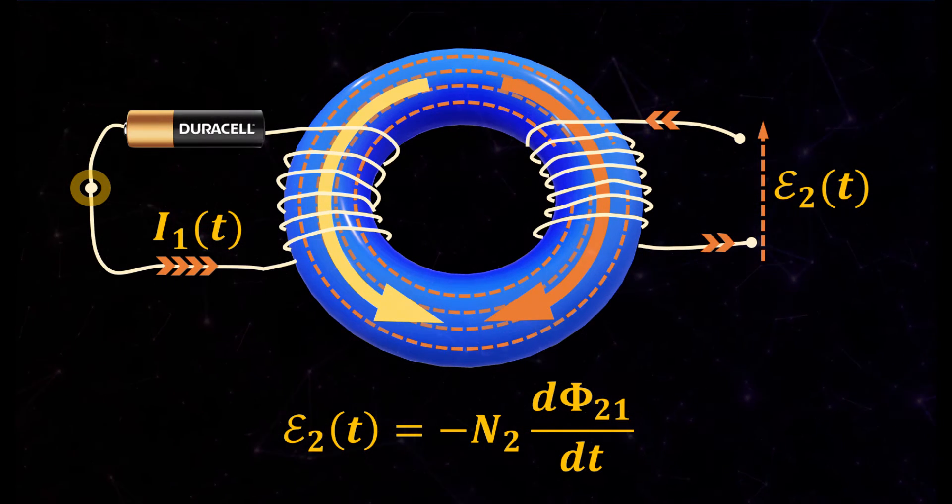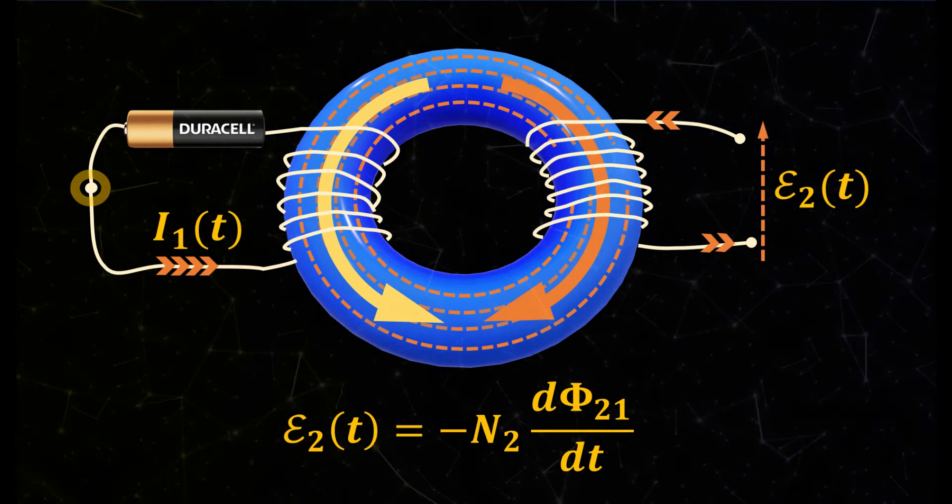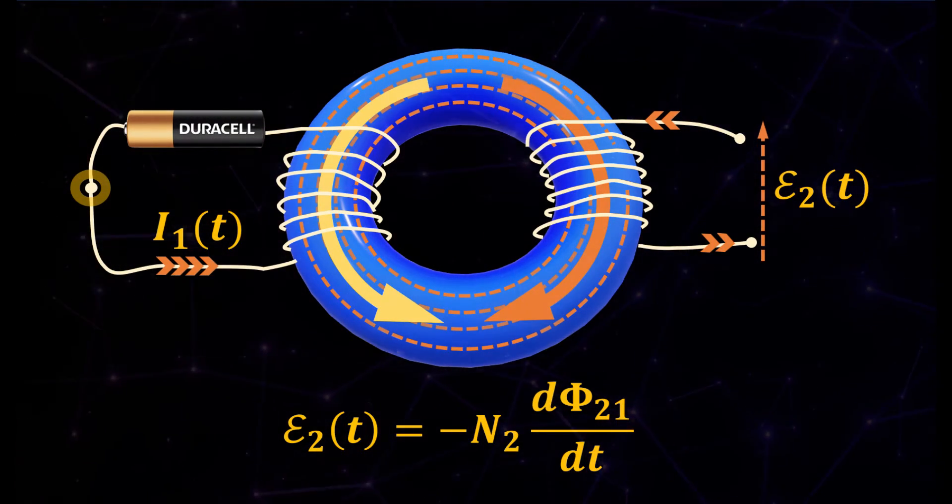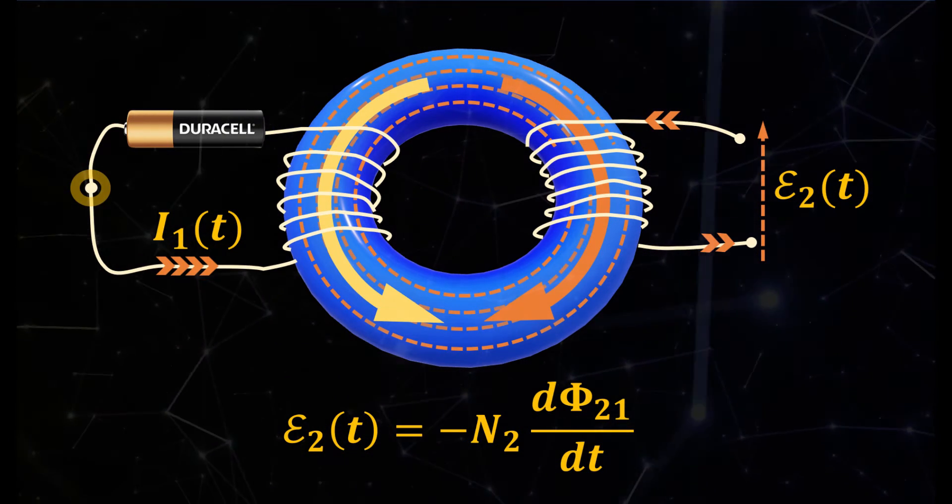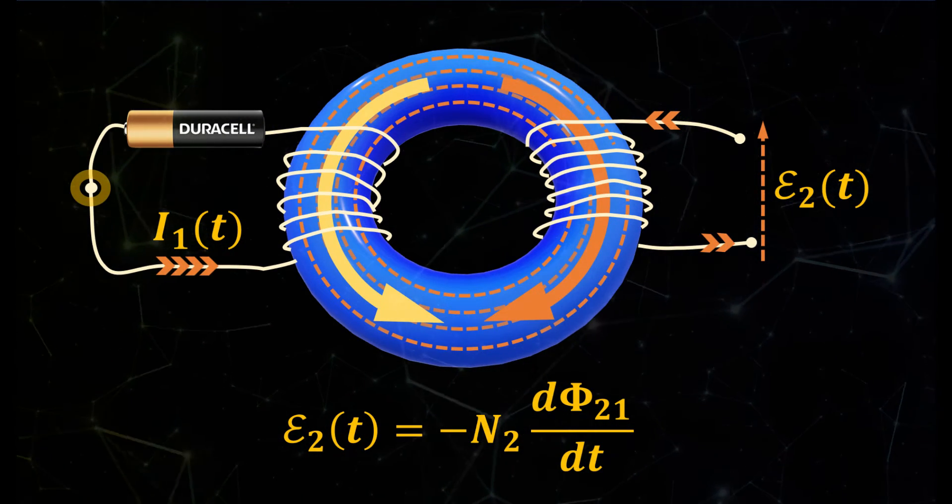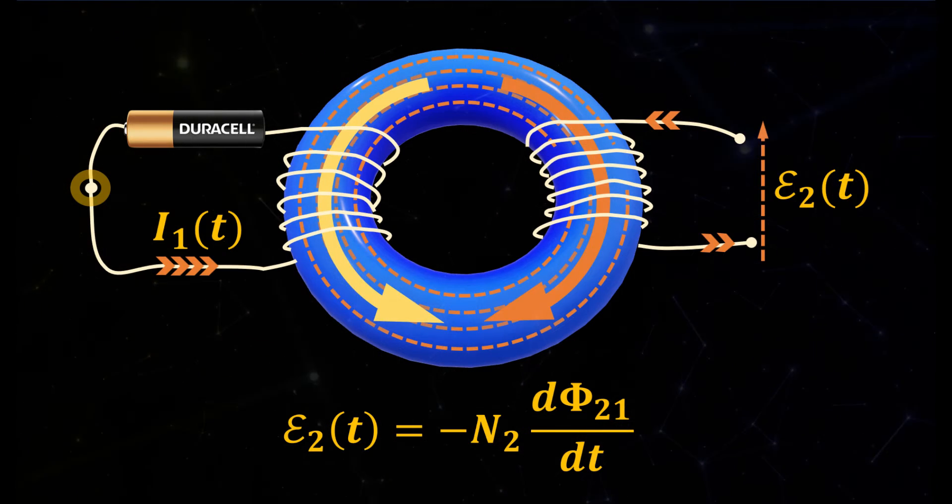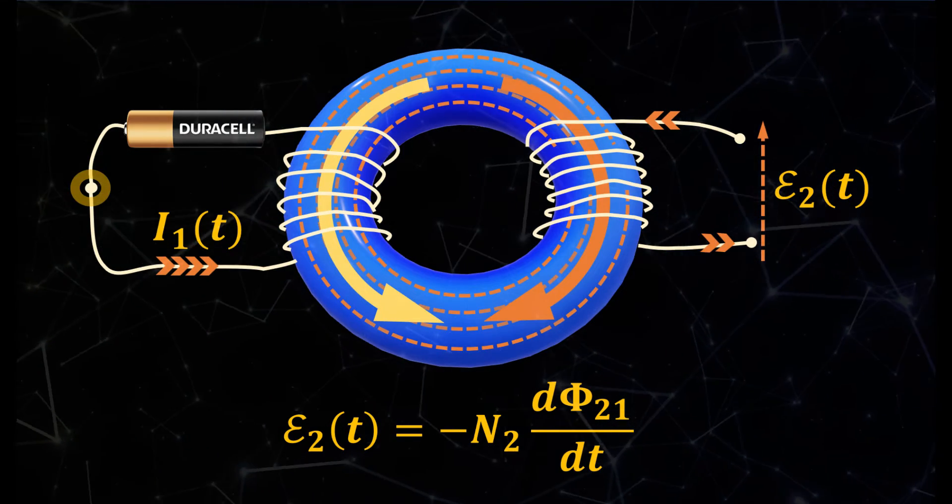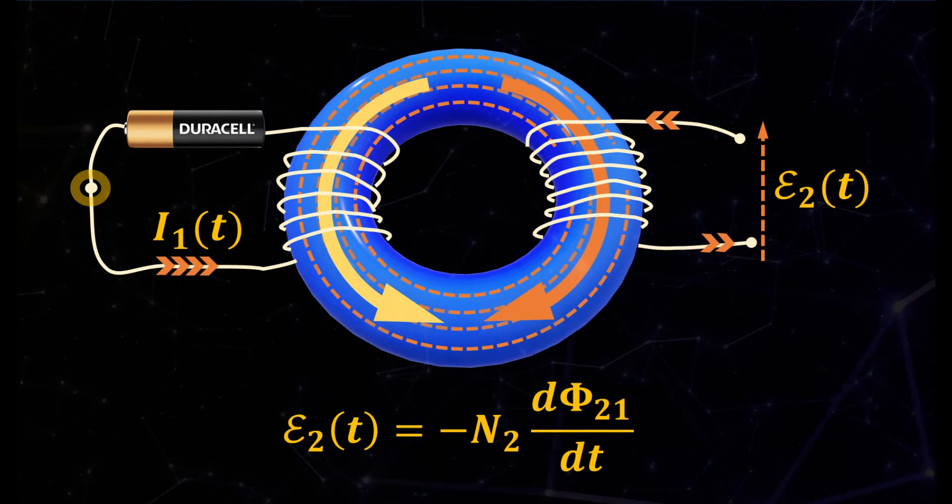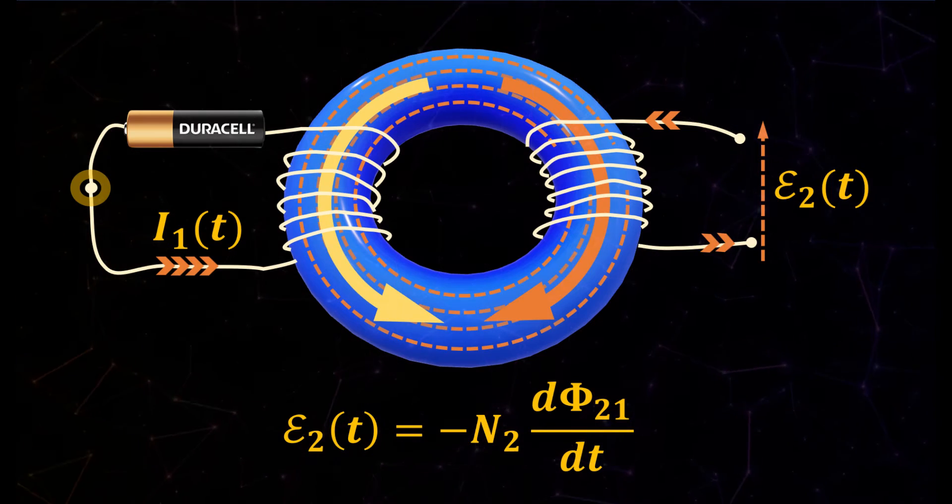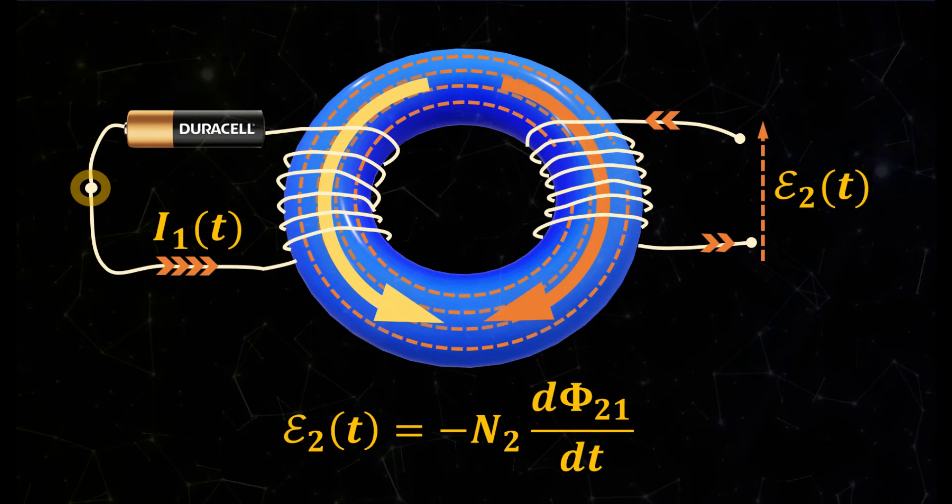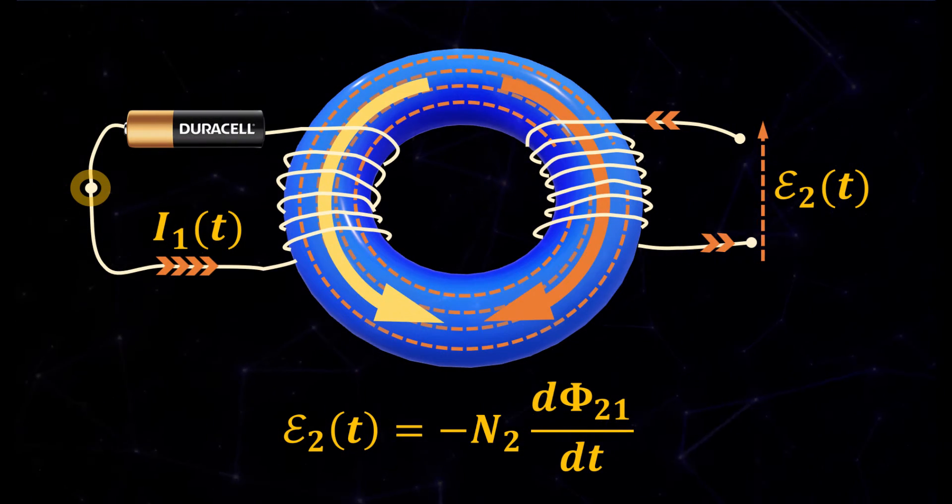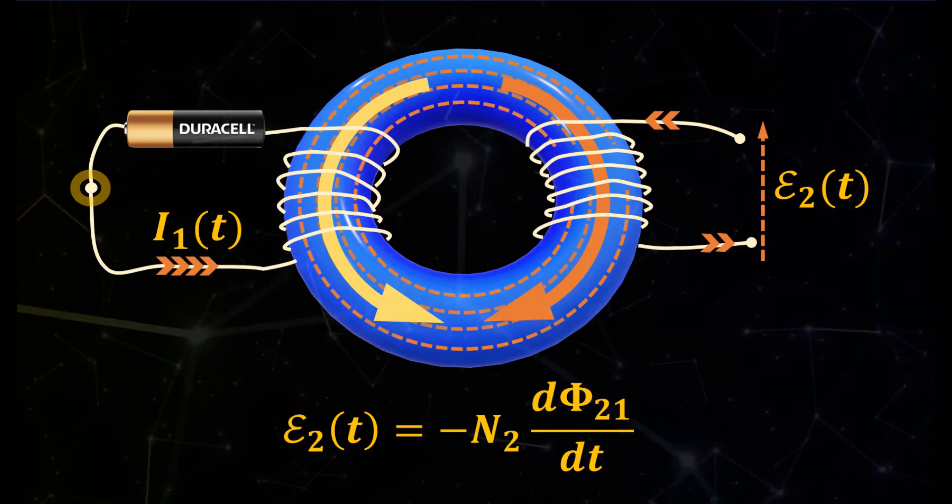An electromotive force Epsilon 2 will be induced on the second coil which according to Faraday's law is given by the number of coils multiplied by the rate of change of magnetic flux with time. But how does one decide the polarity of this induced voltage? Lenz's law states that the direction of the induced electric current is such that the magnetic field it creates will counteract the magnetic field that produces it as indicated by the orange arrow. The negative sign in Faraday's law is an embodiment of Lenz's law. Thus according to the right thumb rule, the polarity of Epsilon 2 is such that the induced current flows in the direction as indicated.